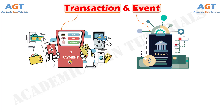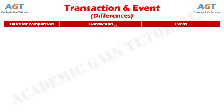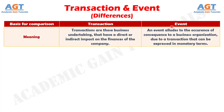Let's look into the basic differences between transaction and event in a tabular form. Difference number one: by the term transaction, we mean the exchange of asset or discharge of liabilities for adequate consideration between two persons or accounts. Conversely, an event, otherwise known as the economic event, is the happening of the consequence to the business enterprise as a result of a transaction that can be measured in monetary terms.